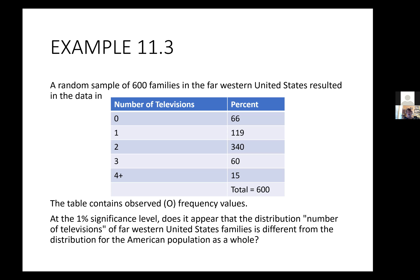They took a sample of 600 families. What they found is that the numbers look like this. So 66 — that's the number of families in this sample of 600 that didn't own any televisions. The number of families who owned one television was 119. The number of families that owned two televisions was 340, et cetera. So this table contains the observed frequency values. We have what we would expect from the previous table and what we observed from this table.